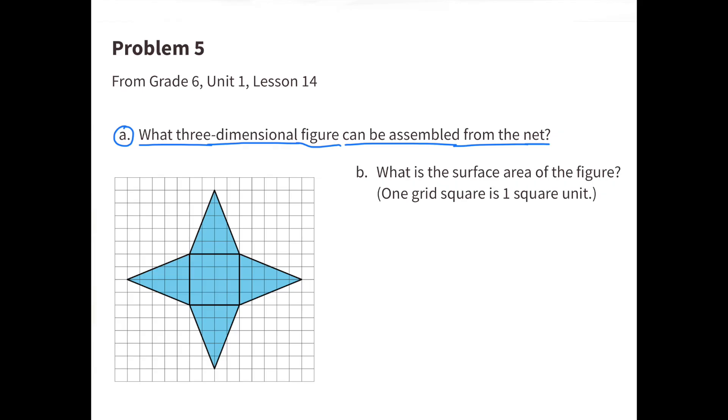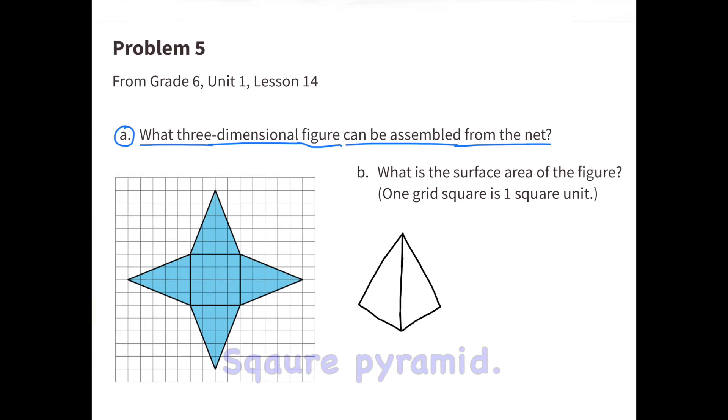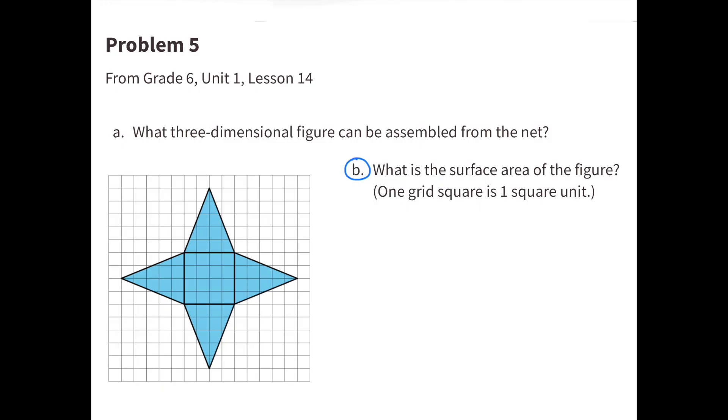Number 5. Part A: What three-dimensional figure can be assembled from the net? A square pyramid can be assembled from this net. Part B: What is the surface area of the figure? One grid square is one square unit.